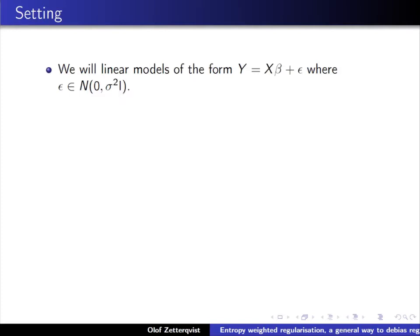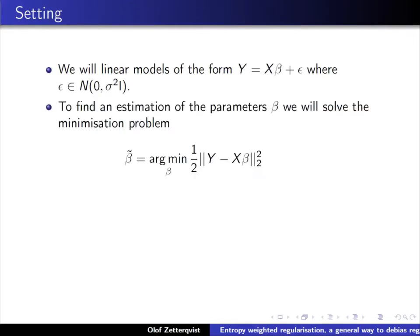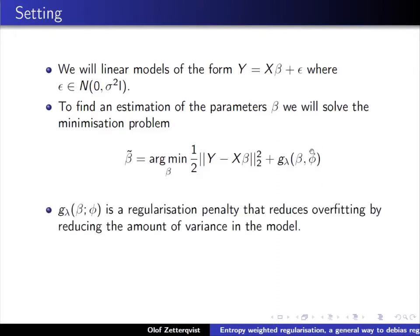This is a regular linear regression task. To find an estimate of beta, we minimize the L2 squared term of the residuals, and we add a regularization penalty G-lambda to the loss function applied to parameters beta. We have shape parameters that determine the form of the regularization term—for example, weights in adaptive lasso or the width in SCAD.